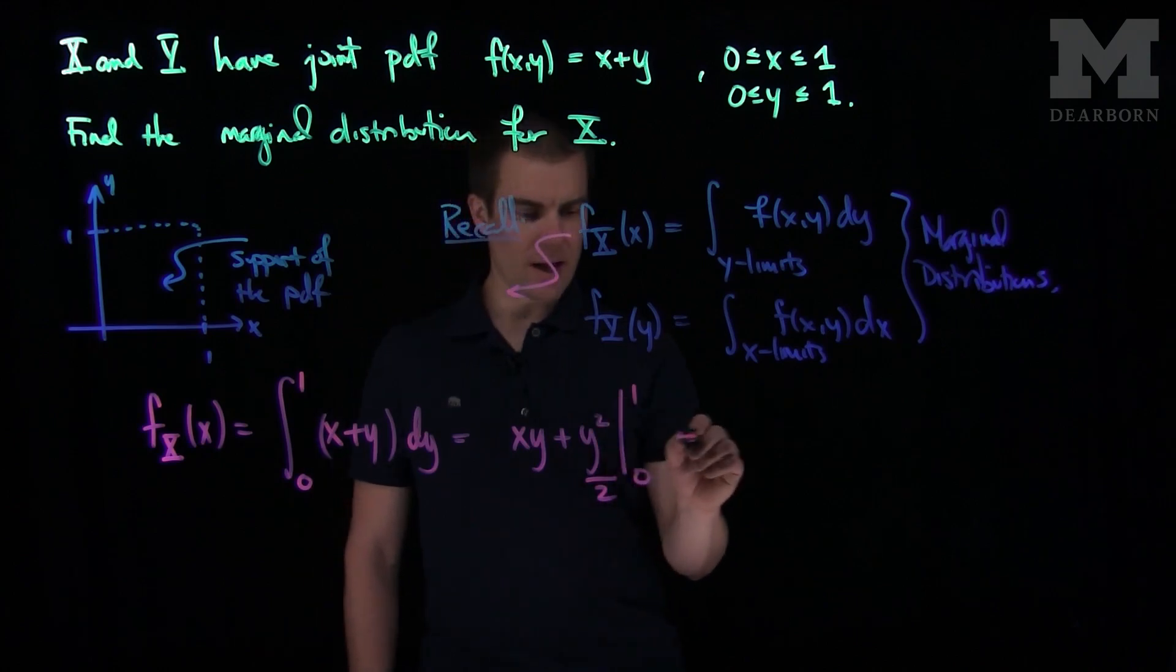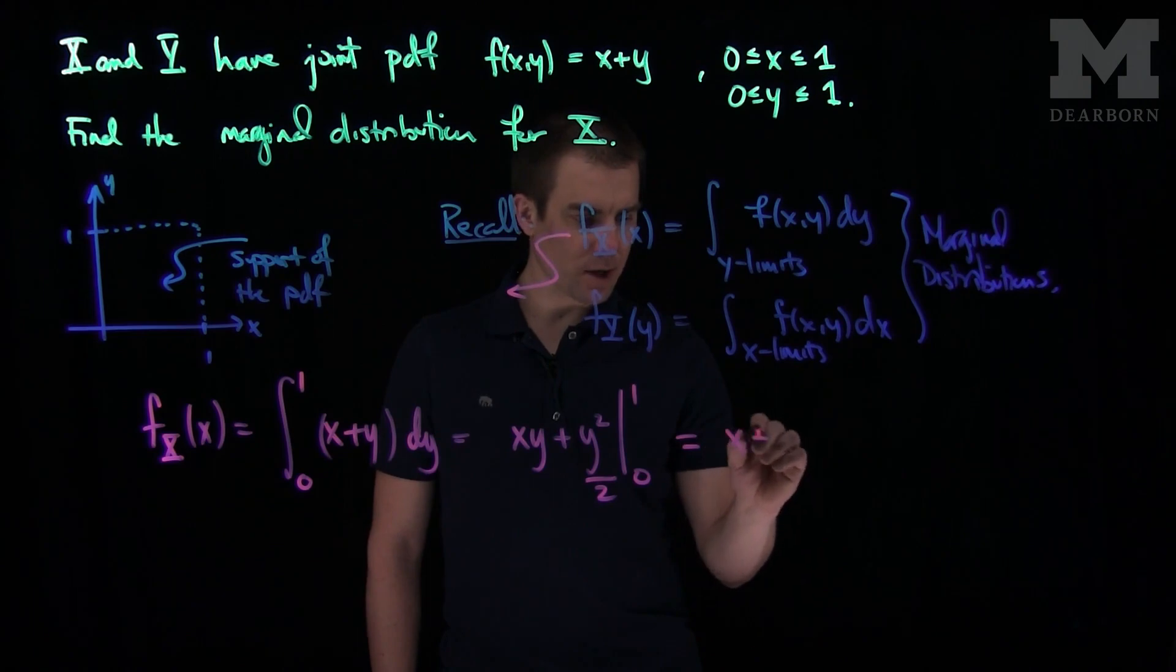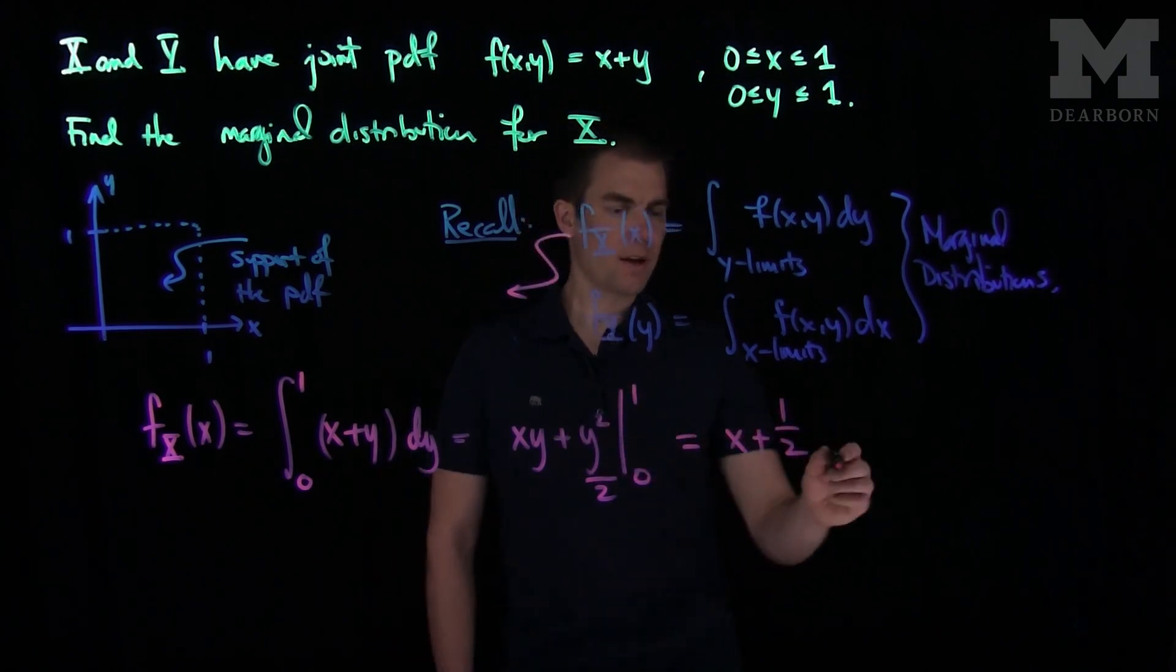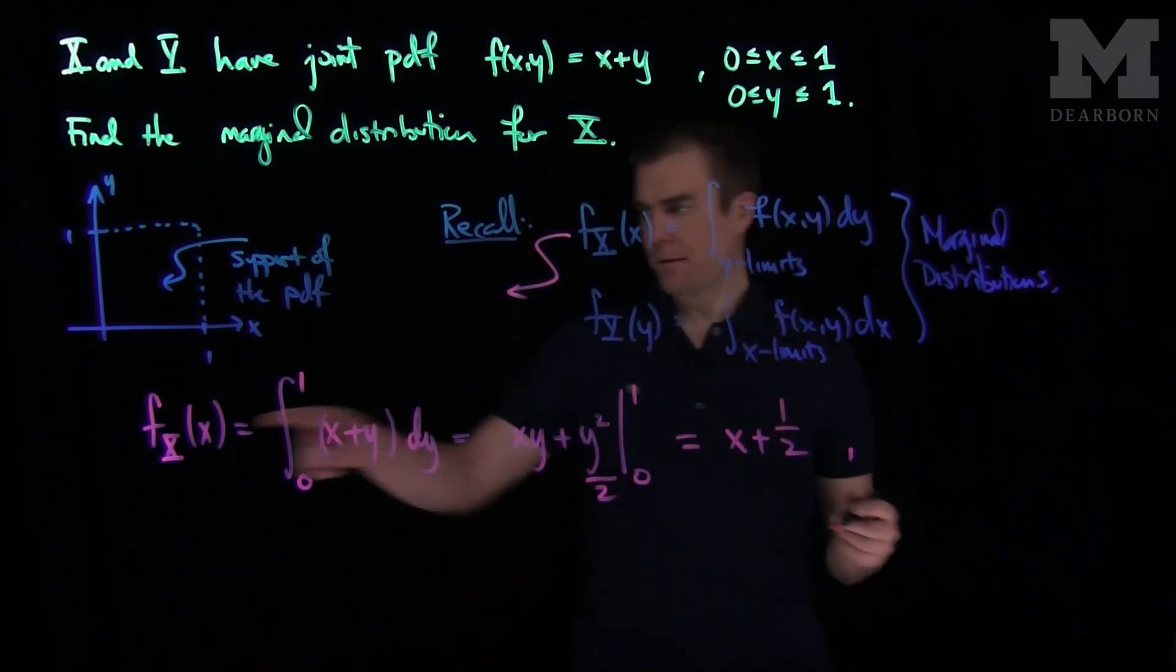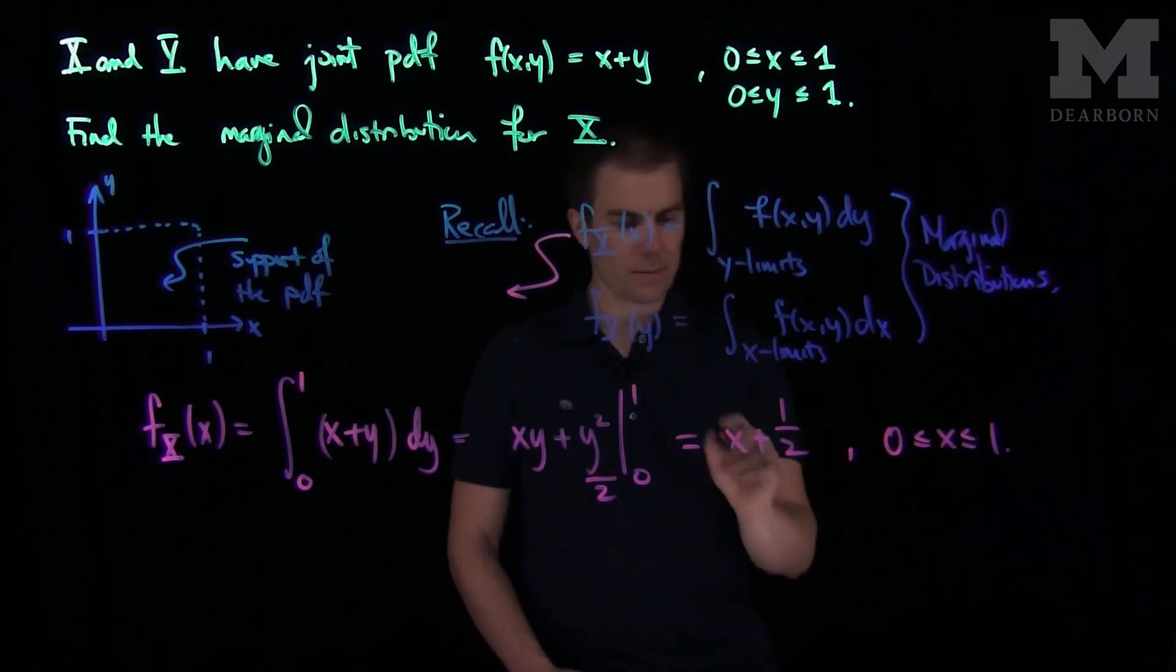When we plug in y equals 0 on the bottom, we get nothing. When we plug in y equals 1 on top, we get x plus 1/2. And this marginal is supported between 0 and 1. This is our solution.